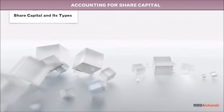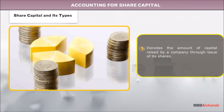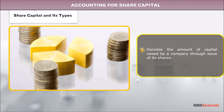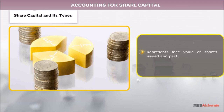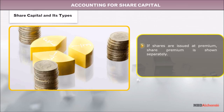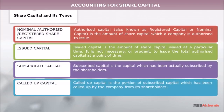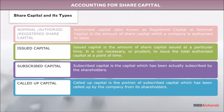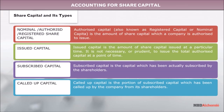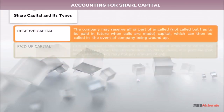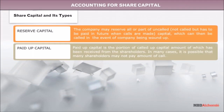Share Capital and Its Types: Share Capital denotes the amount of capital raised by a company through issue of its shares. It represents the face value of shares issued and paid. If shares are issued at premium, share premium is shown separately. Types of share capital are: Authorized Capital, Issued Capital, Subscribed Capital, Called Up Capital, Reserve Capital, and Paid Up Capital.